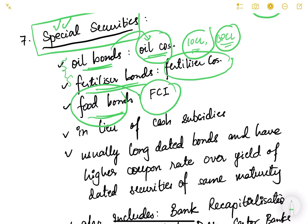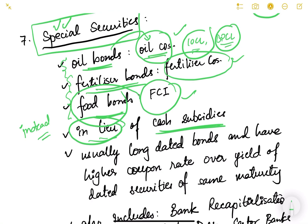These are different types of bonds for specific purposes. They are issued in lieu of cash subsidies — meaning instead of giving cash subsidies to these companies, the government gives them these securities. For example, instead of giving cash to fertilizer companies, food corporations, or oil companies, the government tells them to hold these bonds, and it will pay them back in future.